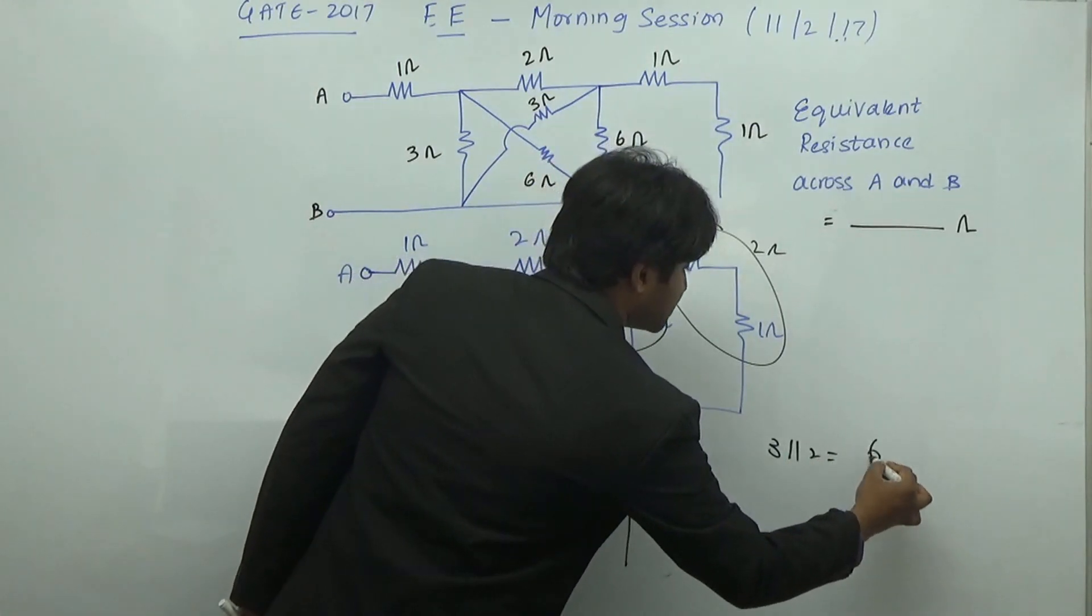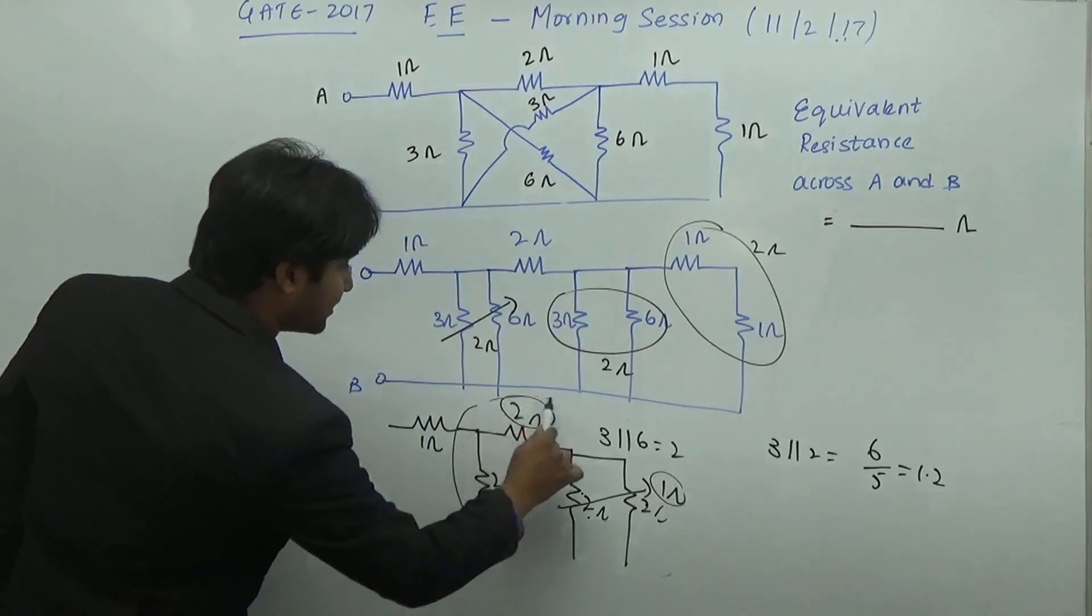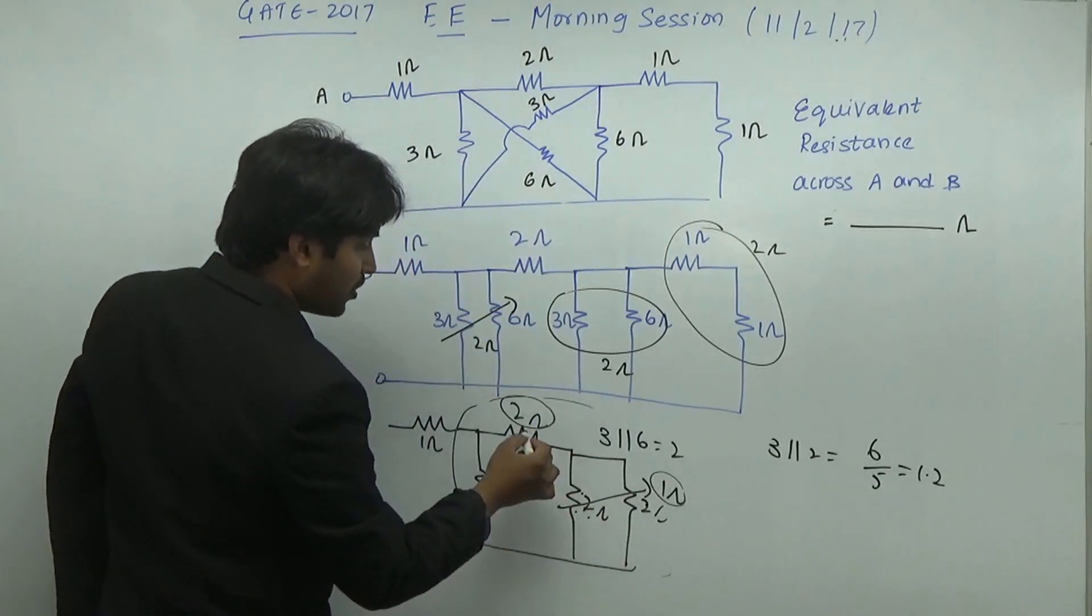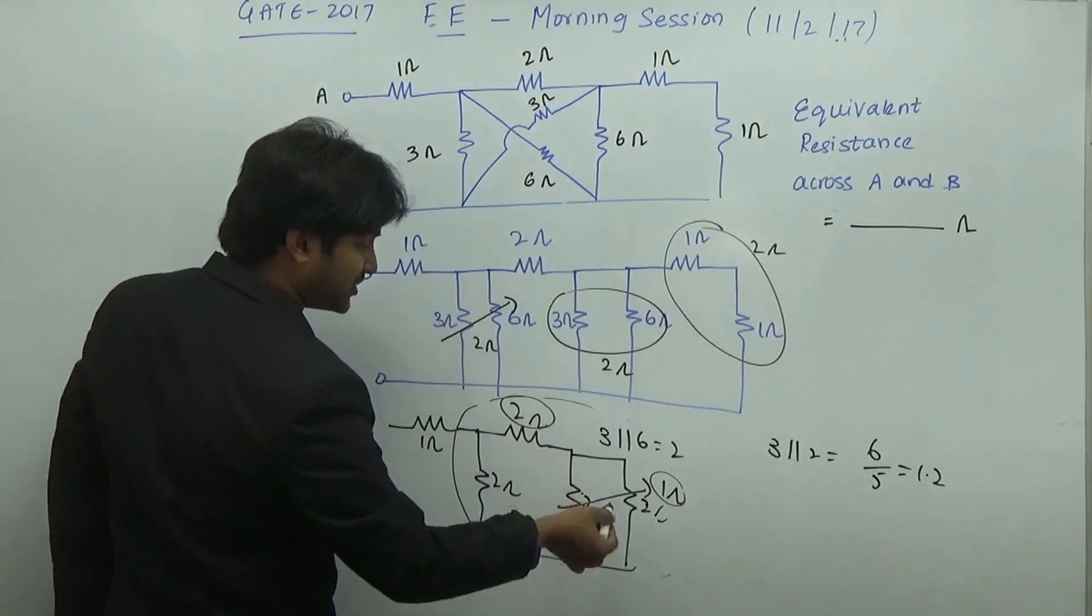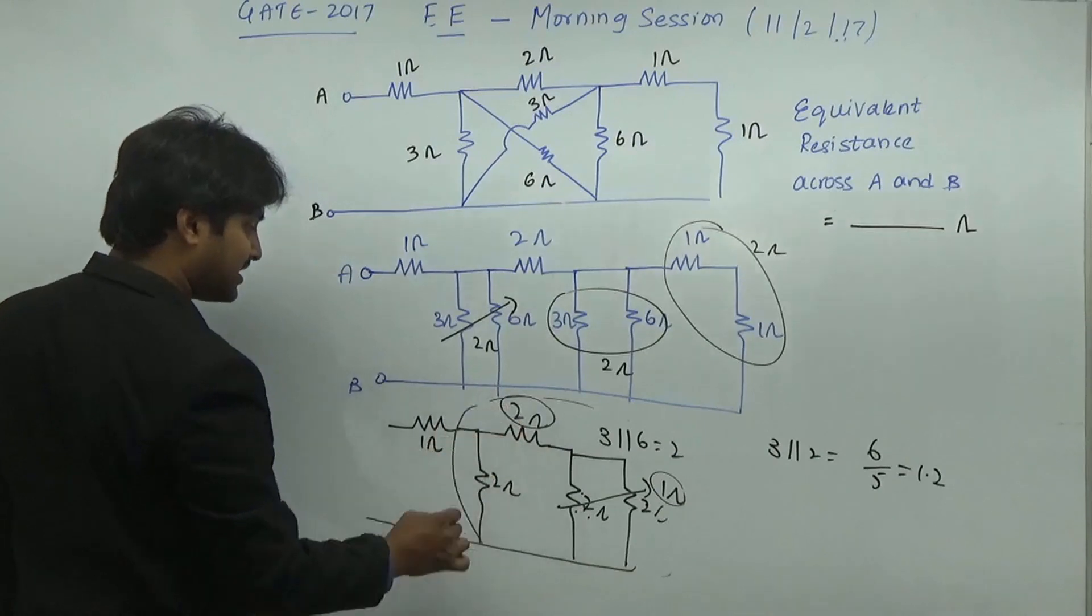So you are going to have 6 by 5 which is equal to 1.2. So total resistance until here it is going to be equal to 1.2 ohms. 2 ohm, 2 ohm it is going to be 1 ohm, 1 ohm 2 ohm. In series it is going to be 3 ohms, 3 ohms parallel to 2 ohm, it is going to be 1.2 ohms till here and 1 ohm.